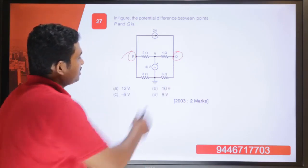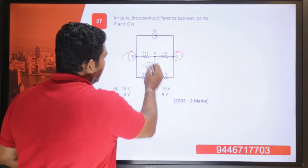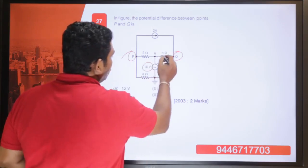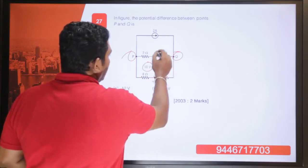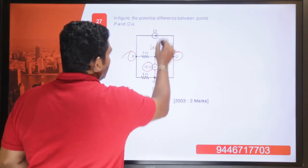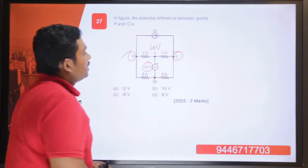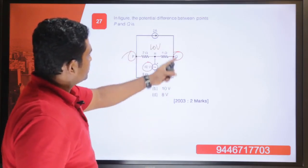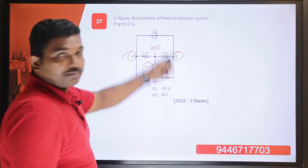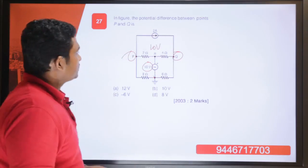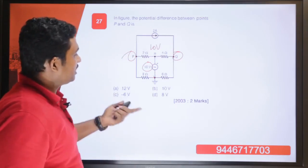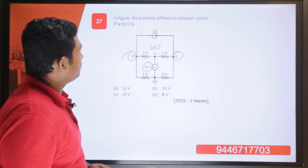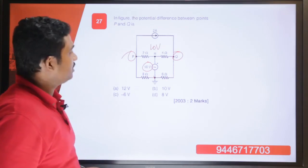Here you can see there is a 10 volt voltage source connected. The voltage at point R is 10 volt and a 2 ampere source is connected between P and Q. We are going to make equations to find out the potential difference between P and Q.